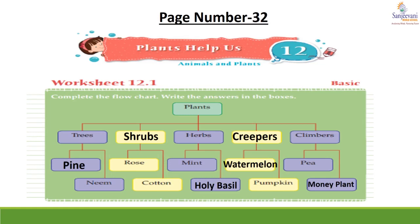Now comes to the second row. In the first box you will write pine — P-I-N-E — and in the second box you will write watermelon — W-A-T-E-R-M-E-L-O-N. In the third column, first box you will write holy basil — H-O-L-Y B-A-S-I-L — and in the second box you will write money plant — M-O-N-E-Y P-L-A-N-T.